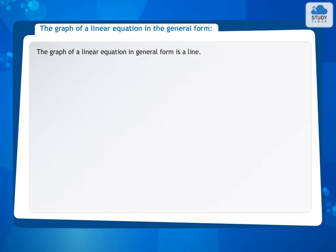The graph of a linear equation in general form is a line. 2x plus y equals 4 is a linear equation in two variables in general form.